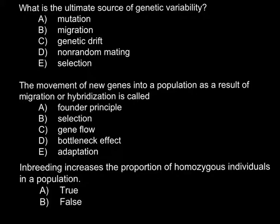Answer A: mutation. Answer B: migration. Answer C: genetic drift. Answer D: non-random mating. Answer E: selection. I want to start from the end of this list — selection. Selection always means that we select something, and that means genetic variability would be reduced, so we have to cross out this answer.